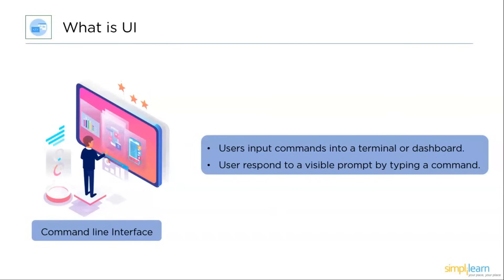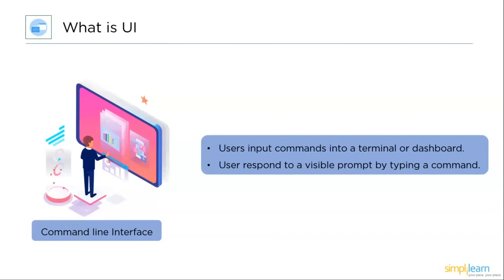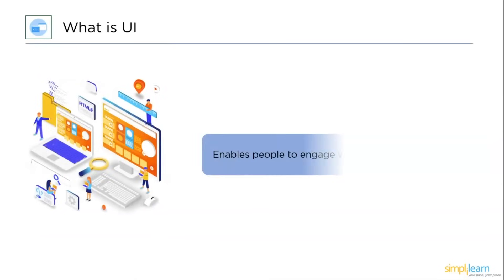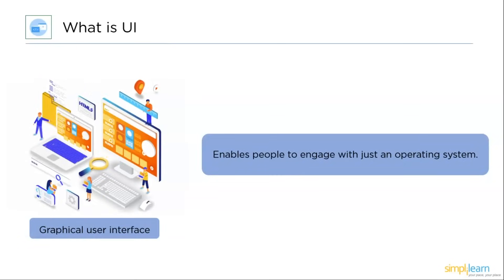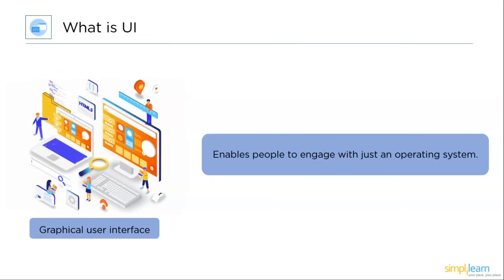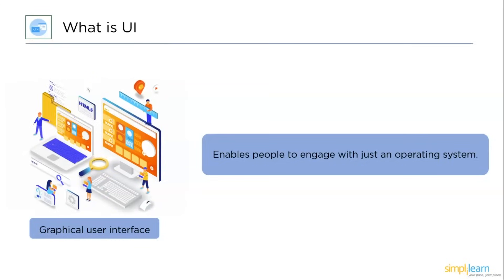The first type is the command line interface, or CLI. CLI enables users to input commands into a terminal or dashboard window to communicate with software. Users respond to a visible prompt by typing a command and receiving the system's response. Next is the graphical user interface, or GUI, which enables people to engage with an operating system using graphics. GUI includes menus, windows, scroll bars, buttons, wizards, icons, and much more, and information can be shown in any format including text, videos, or photos.